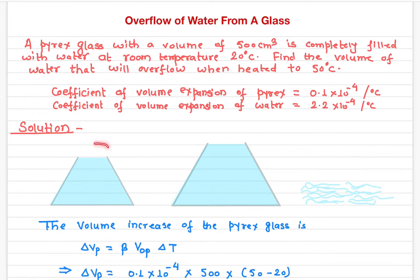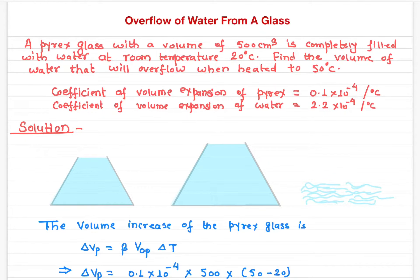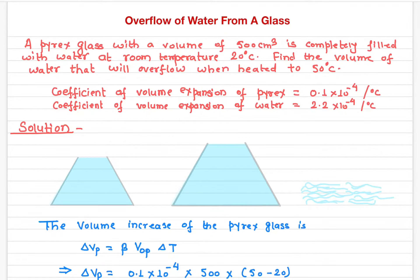We have a Pyrex glass — this part is glass — and the volume of this Pyrex glass is 500 cubic centimeters. It is completely filled with water at a certain temperature; in this case it is room temperature, 20 degrees Celsius.